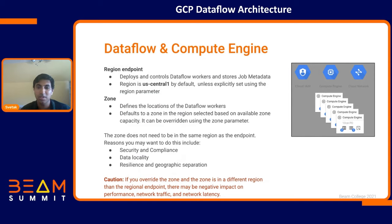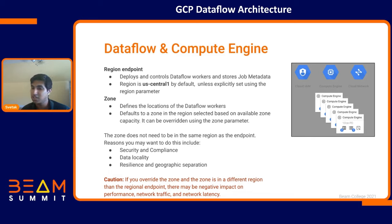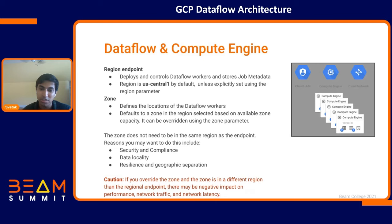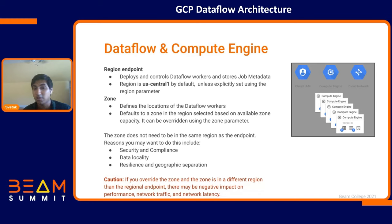The regional endpoint corresponds to our primary worker — it deploys and controls Dataflow workers, stores job metadata, and is set to us-central1 by default. The zone, on the other hand, corresponds to where our secondary workers are — it defines the location of the workers actually executing your work. Sometimes you may not want the zone to be in the same region as the regional endpoint, for reasons such as data resiliency or security compliance, but you'll need to account for potential network latency when communicating across regions.